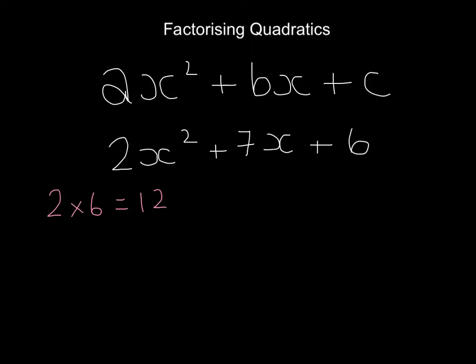What I'm now doing is looking for two numbers that multiply to give 12 and add to give 7. Two numbers that multiply to 12 and add to 7 must be 3 and 4.